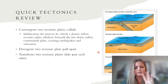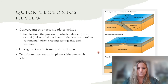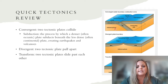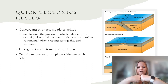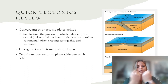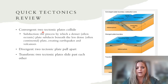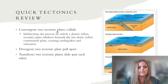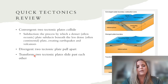Here's a quick tectonics review. We have three plate boundaries: convergent, divergent, and transform. Convergent is two plates colliding. A tectonic plate is a piece of Earth's crust that slides along the asthenosphere, which is semi-solid and allows tectonic plates to move either together, apart, or sliding past each other. Convergent means coming together, divergent means pulling apart, and transform means sliding past each other.